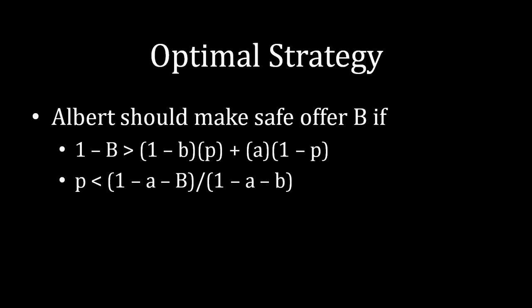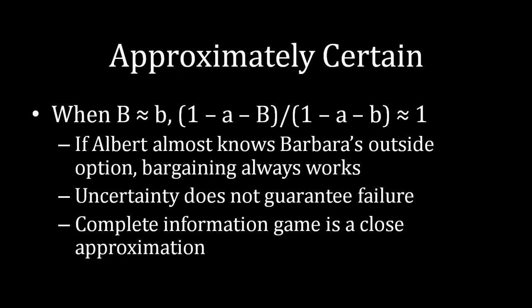And that doesn't actually seem like anything significant, like why should we care about that? But this actually tells us a lot about what's going on. So let's think about that inequality, 1 minus a minus uppercase B divided by 1 minus a minus lowercase b. Notice that when uppercase B and lowercase b are about the same value, so as the possibilities of Barbara's outside options become increasingly alike, that fraction becomes essentially equal to 1, right? You're taking the same value and dividing it by the same value.